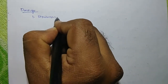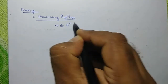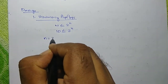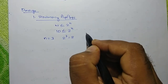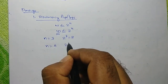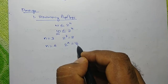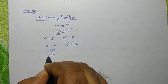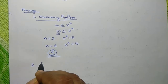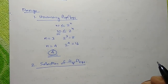How many flip-flops? We have the relation m less than or equal to 2 raise to n, or 10 less than or equal to 2 raise to n. If we use n equal to 3, then 2 raise to 3 equal to 8, which is less than the required mode of 10. Let's use n equal to 4. 2 raise to 4 equal to 16. So, 10 lies between 8 and 16, meaning we need at least 4 flip-flops. We are going to use JK flip-flops.